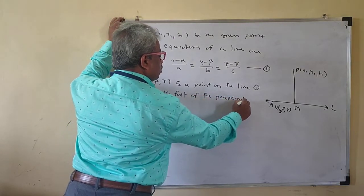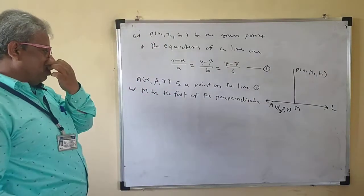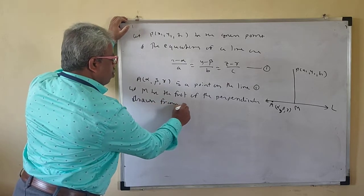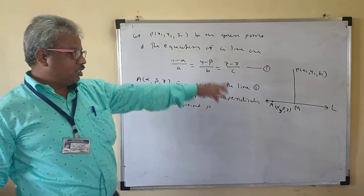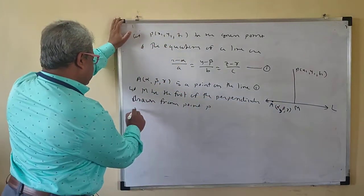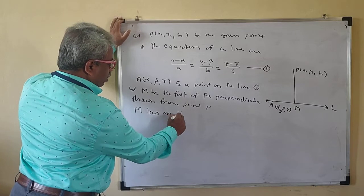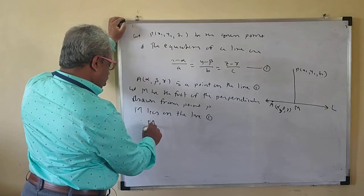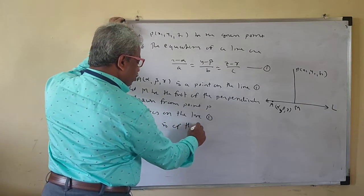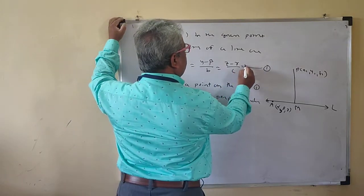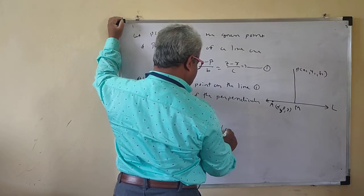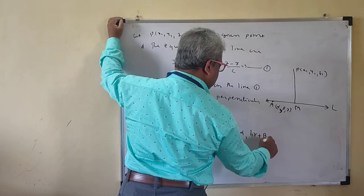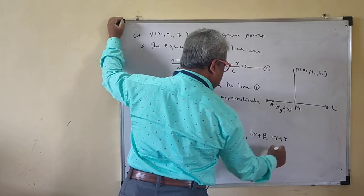Let M be the foot of the perpendicular from point P. M lies on Line 1. Therefore M is of the form: (AR + α, BR + β, CR + γ).